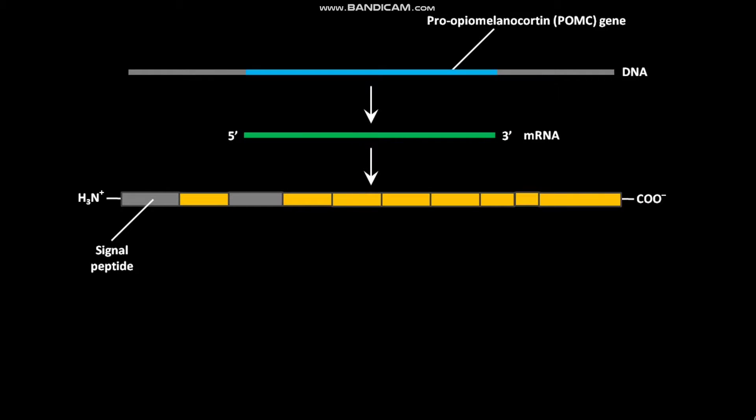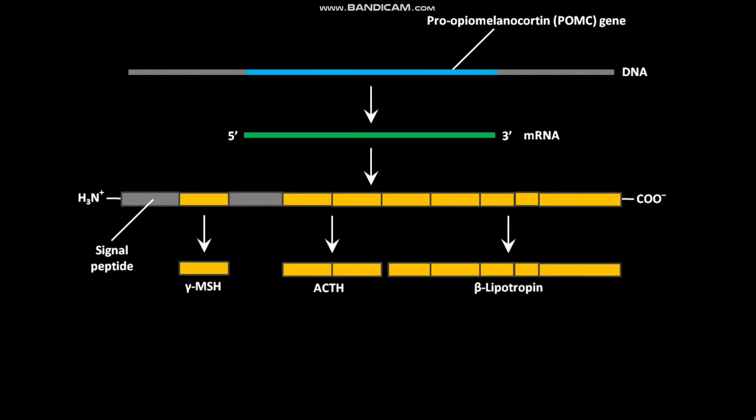This POMC polypeptide undergoes cleavage by a series of specific proteases to produce gamma-MSH, ACTH, and beta-lipotropin.